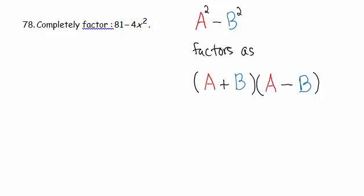The difference of two perfect squares has a nice tidy little formula for factoring it. a squared minus b squared factors as a plus b times a minus b.